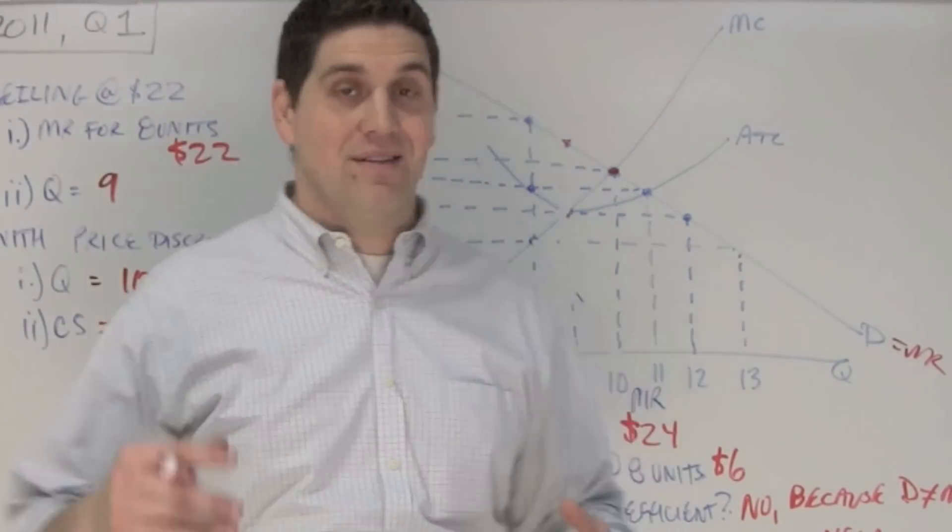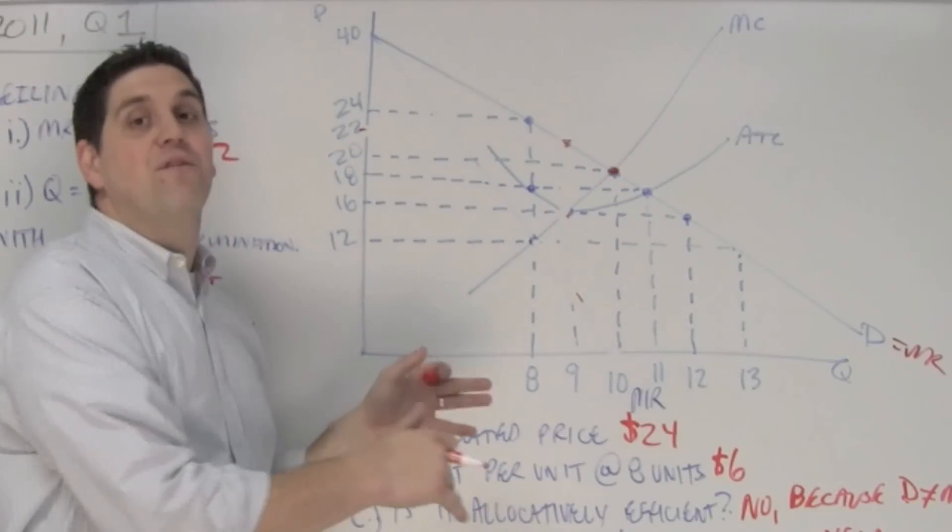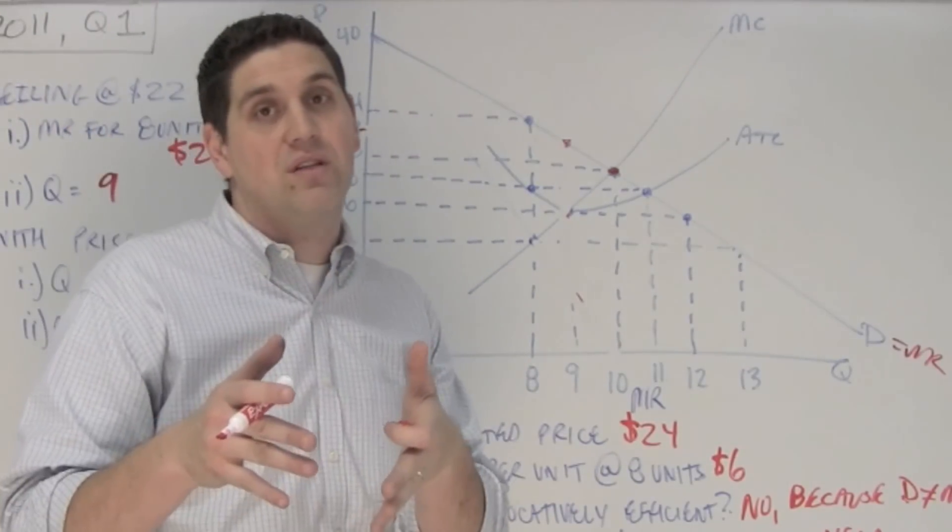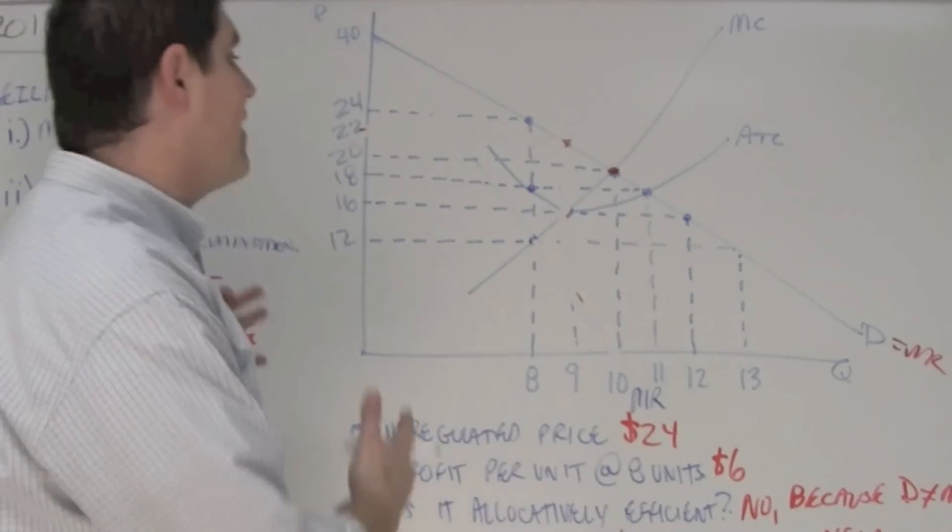That is a bear of a free response. Now, when they give you a monopoly graph, you have to really know your stuff because they're going to ask a lot of detailed questions. Now, that's it. That's a free response. It's out of 10. Add up the points you deserve and try the next free response.